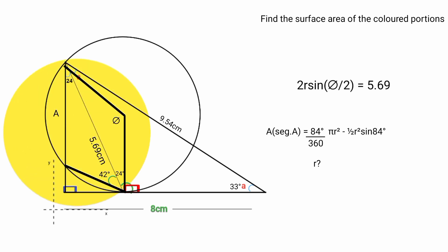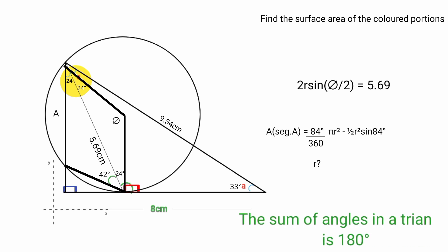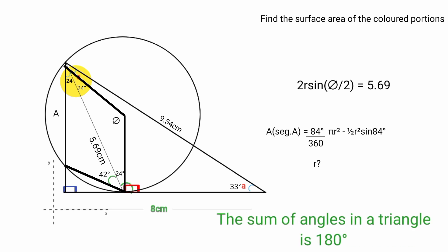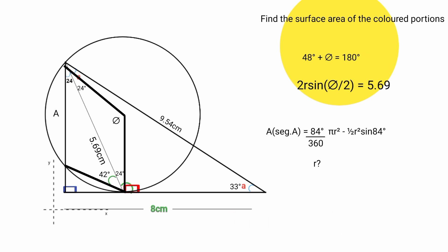From this triangle, since it is an isosceles triangle, this must also be 24 degrees. Based on the rule that the sum of angles in a triangle is 180 degrees: 24 plus 24 plus theta equals 180. 24 plus 24 is 48, so 48 plus theta equals 180, and subtracting 48 from both sides gives theta equals 132 degrees.